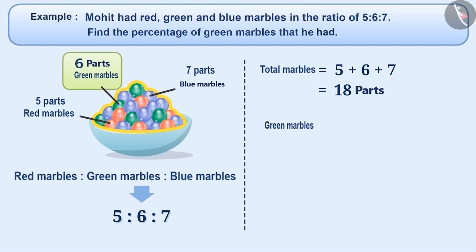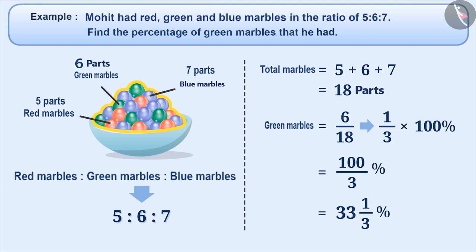Therefore, out of the total marbles, green marbles are 6 by 18 parts. This can be written in its simplest form as 1 by 3. To express it in percentage, we need to multiply 1 by 3 by 100%. 1 by 3 into 100% is equal to 100 by 3, that is, 33 1 by 3%. Therefore, among the total marbles, green marbles are 33 1 by 3%.